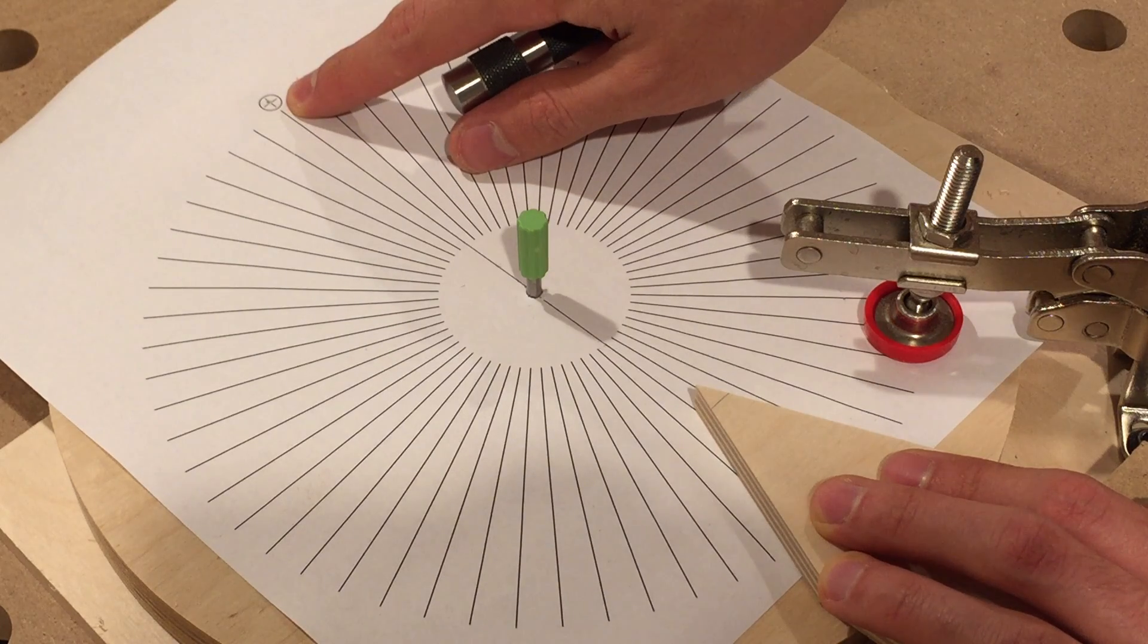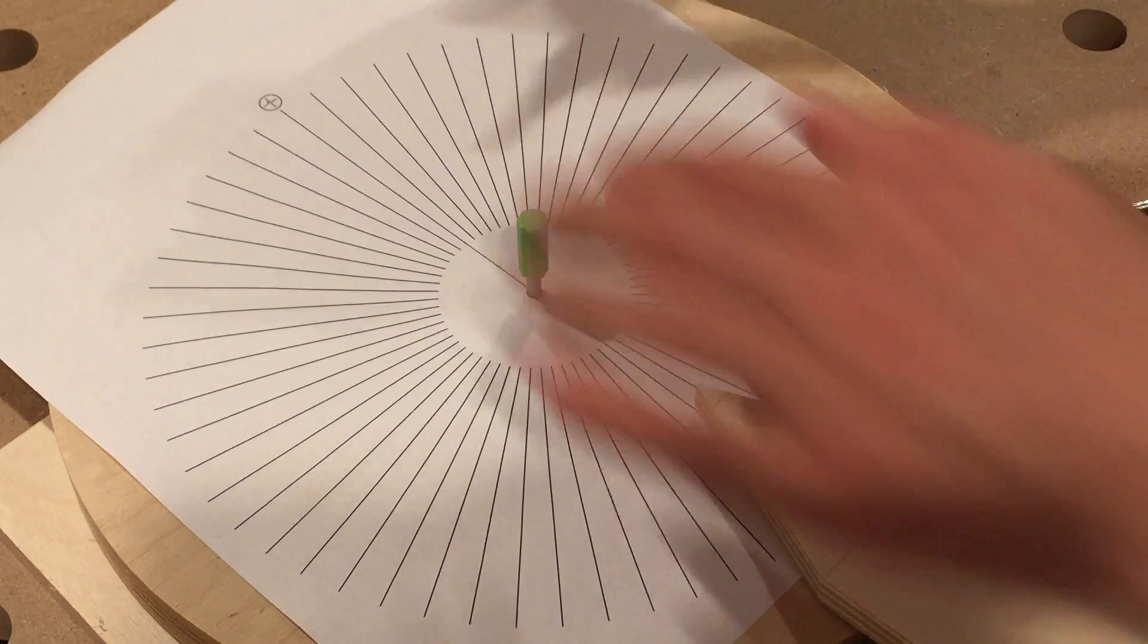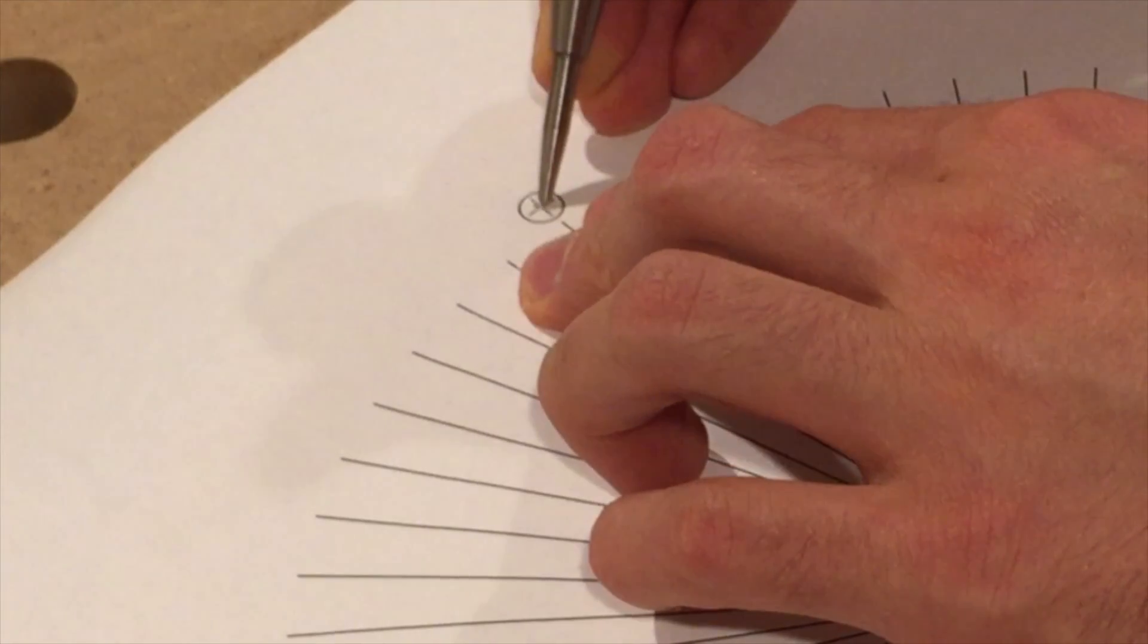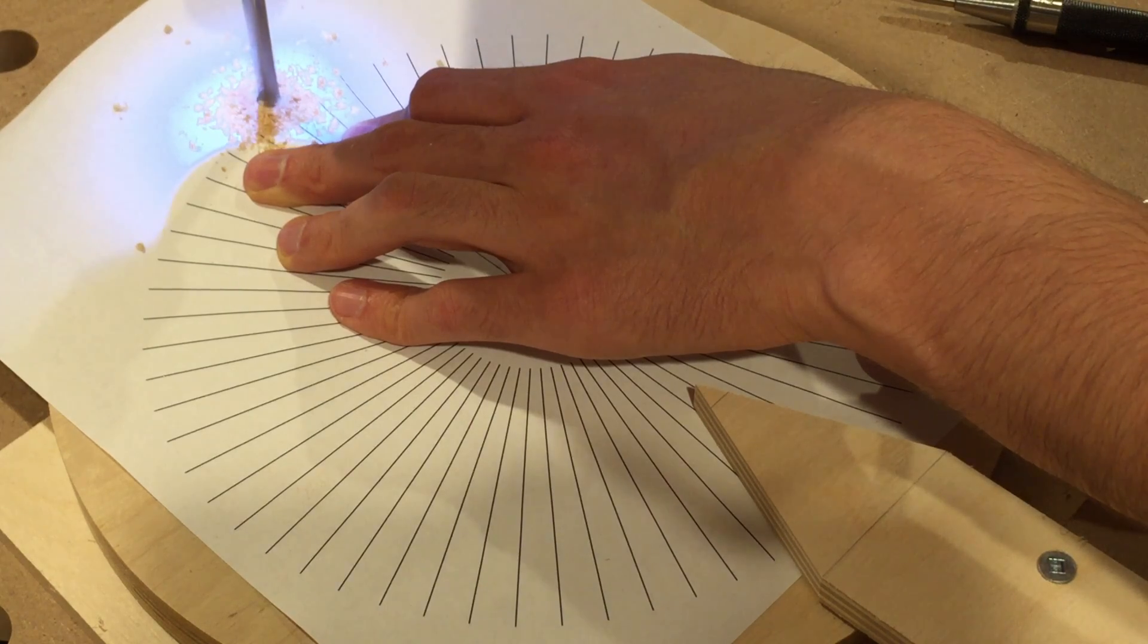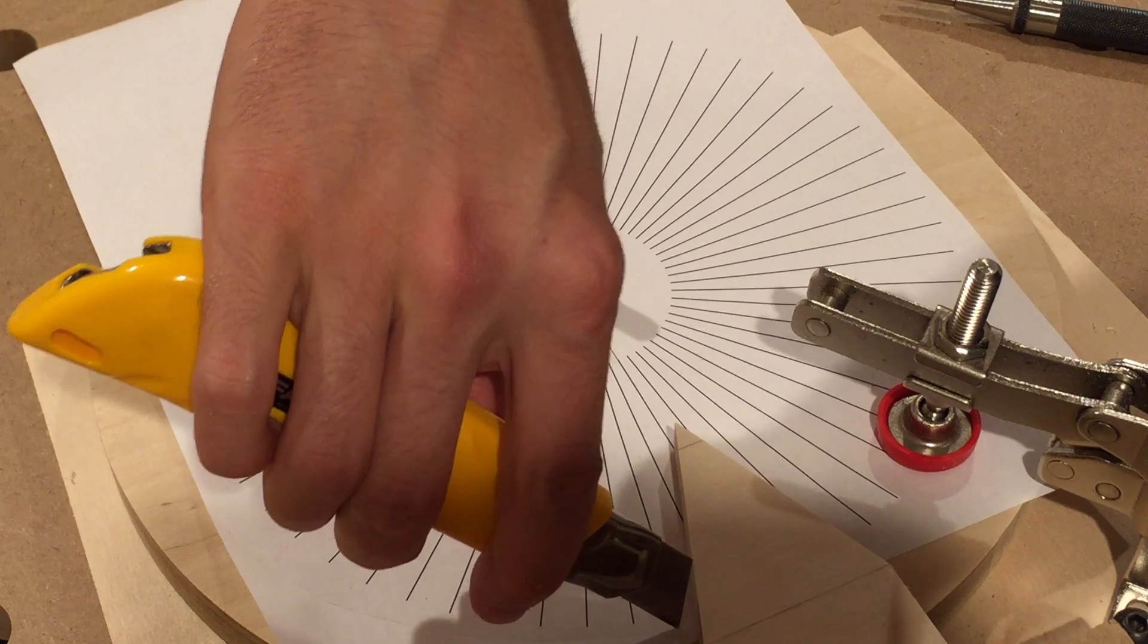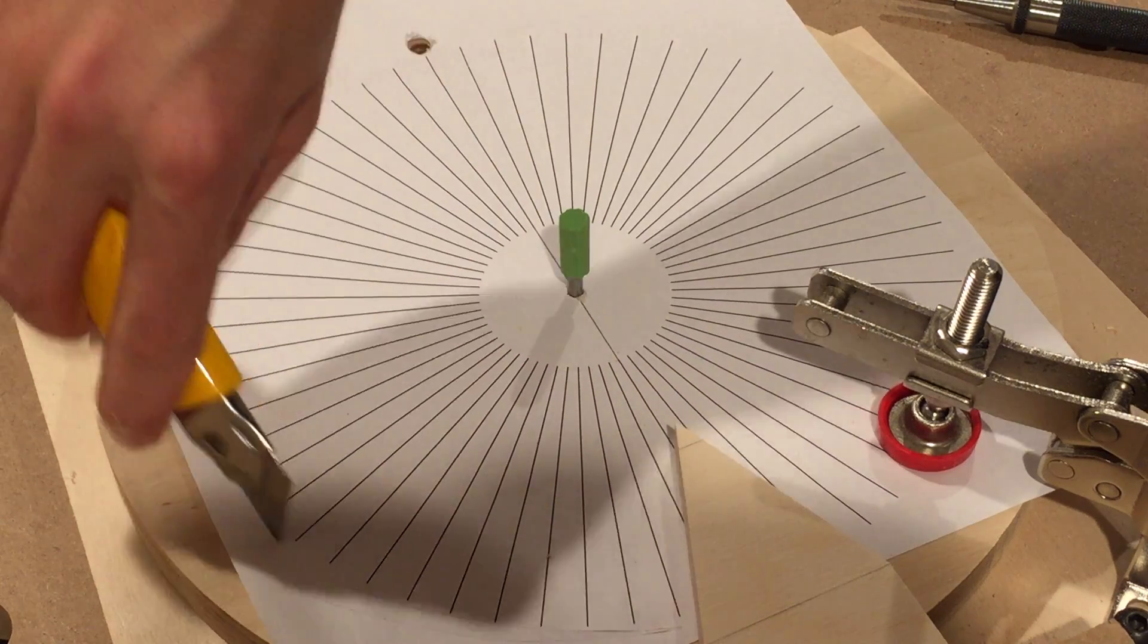This hole is used to guide placement of the fences. If it's not clear now, it will be in a minute. For now, it needs to be drilled out to match the diameter of the router bit. In my case, that's a quarter inch. I'll also cut out the excess from this paper template.